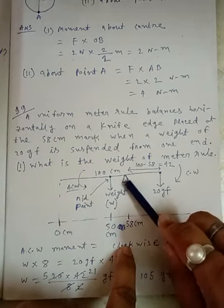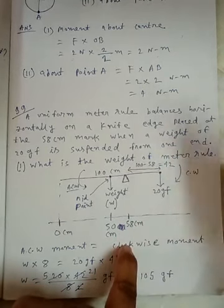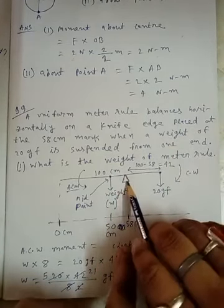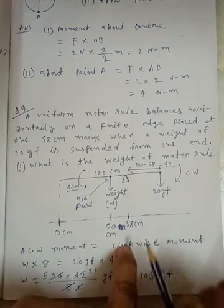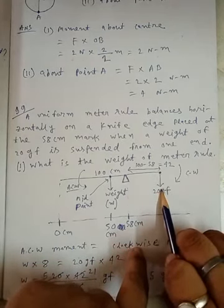Pivoted point means this is the point about which the meter rule rotates. This is the knife edge. Here, it is told that it is knife edge. This is knife edge and a 20 GF force is acted here.